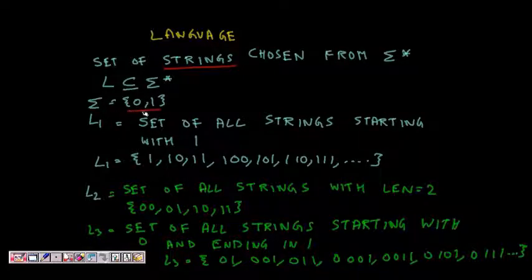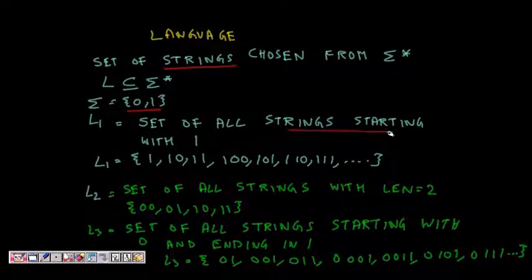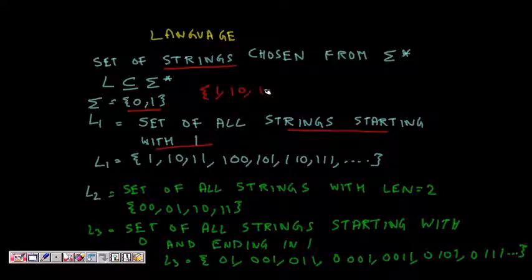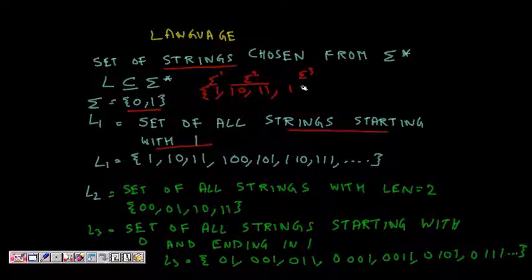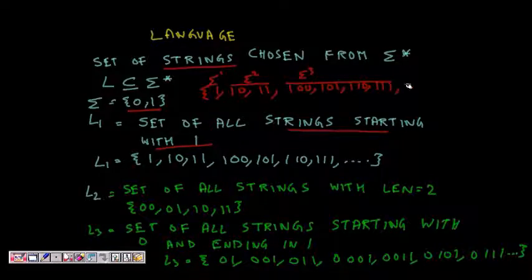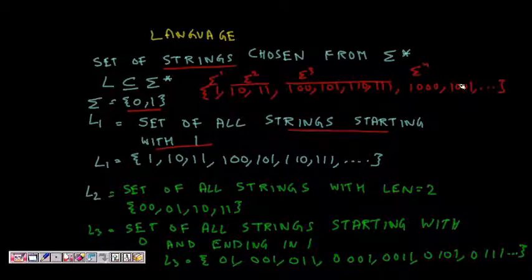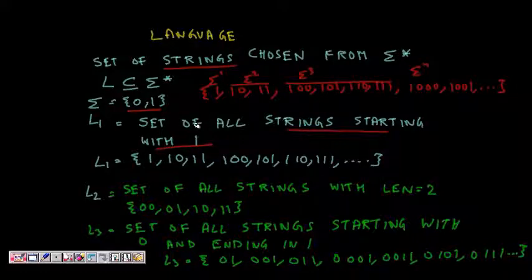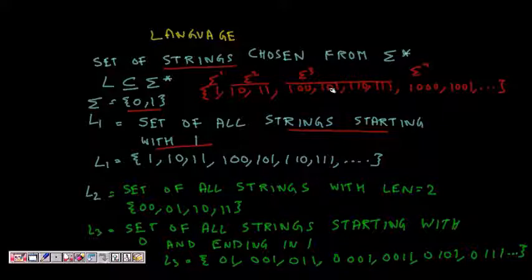Let sigma be {0, 1}. Language L1 might be the set of all strings starting with 1. So it includes: 1, 10, 11, 100, 101, 110, 111, 1000, and so on. This is an infinite set, since string length can go to infinity.